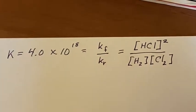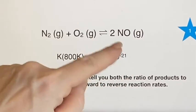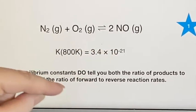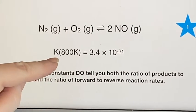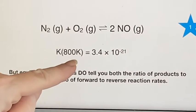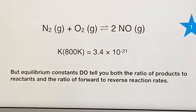We also have a second one here, just so we can look at a different one. Notice here we have nitrogen and oxygen gases, and they will make nitrogen monoxide. This is the value of the equilibrium constant at 800 Kelvin, and still it is tiny, 10 to the minus 21.